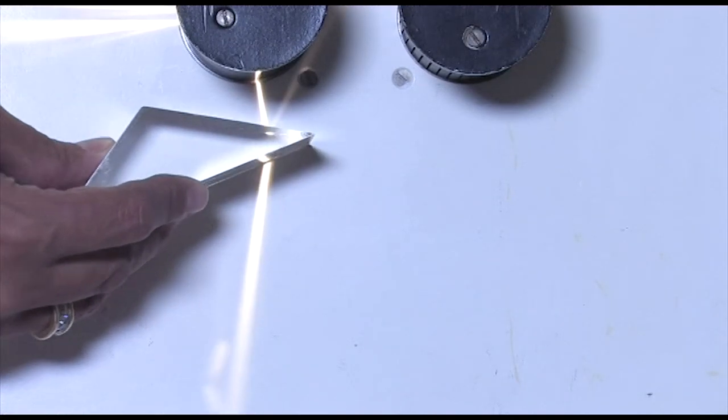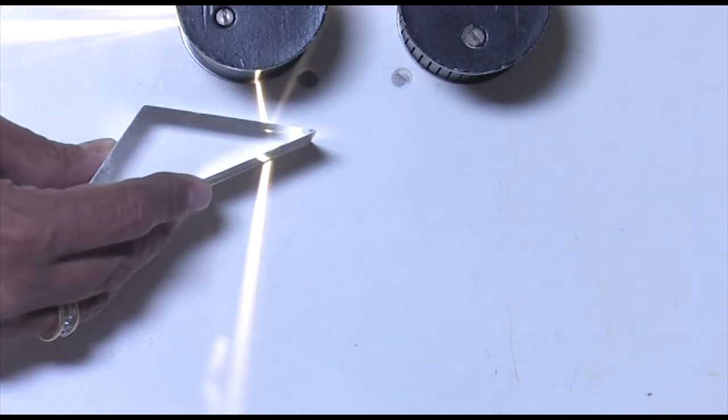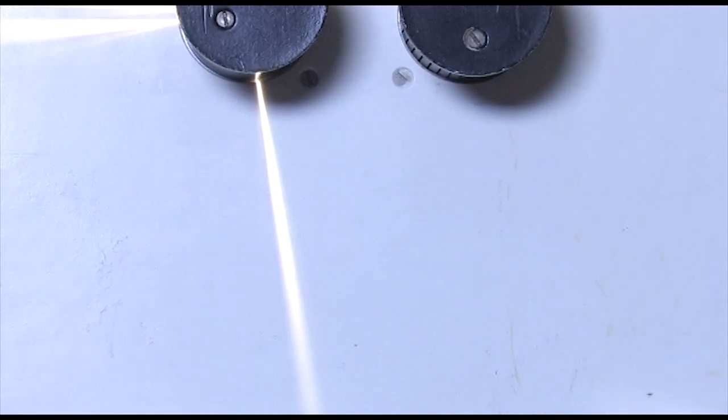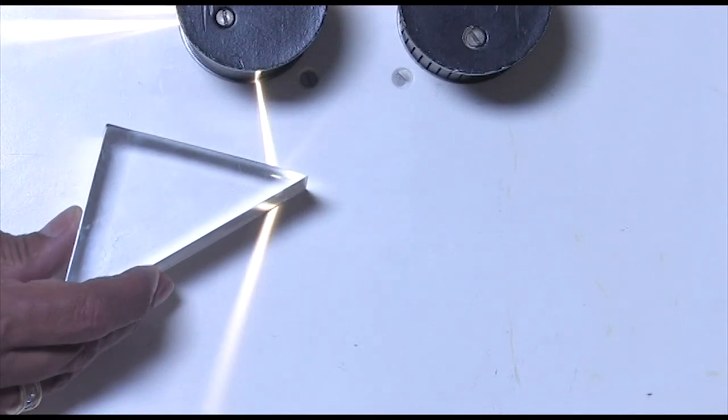This particular prism is only about 15 degrees, so it doesn't bend the light nearly as much as a prism that is, say, 45 degrees. When I introduce that into the path, it bends the light even more.